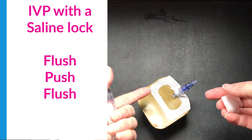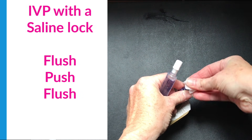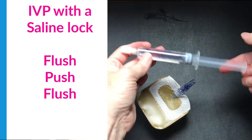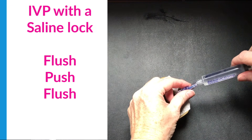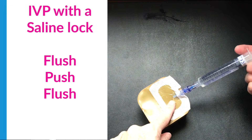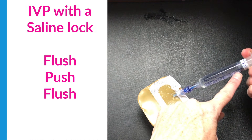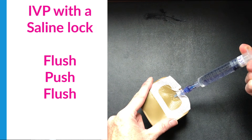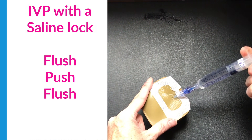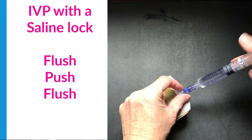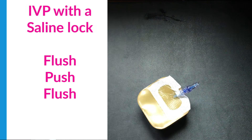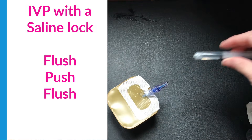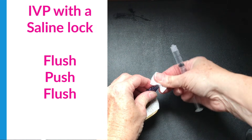If my patient just has a saline lock, I'm going to clean the hub again for 15 seconds. I have a saline flush and I'm going to flush first to make sure the IV is patent — I only need 3 mils for this. I push with positive pressure and it shouldn't be resisting. Once those 3 mls are in, I discard that syringe. Now that my line is flushed and patent, I can go ahead and give my medication.